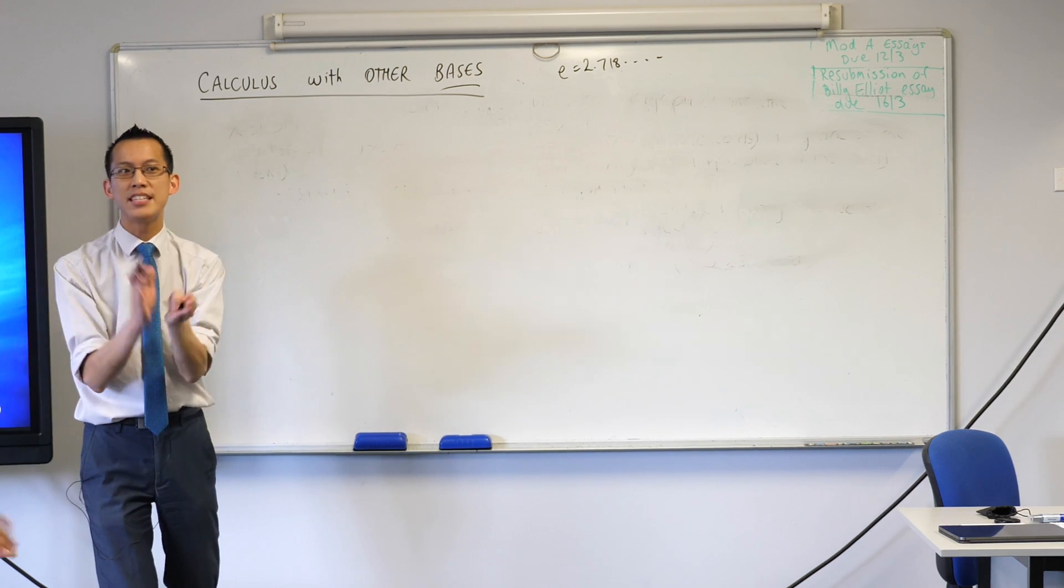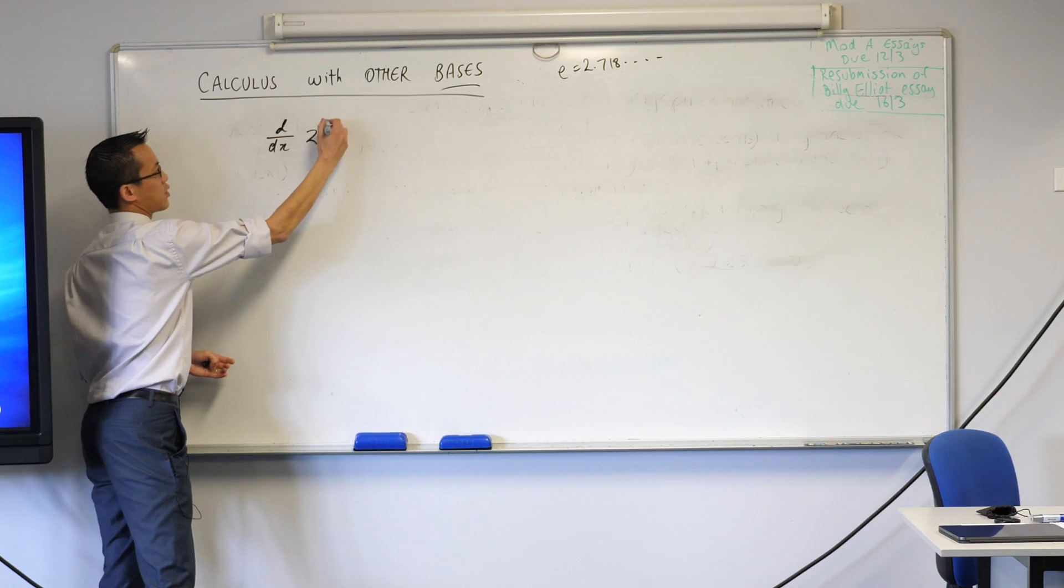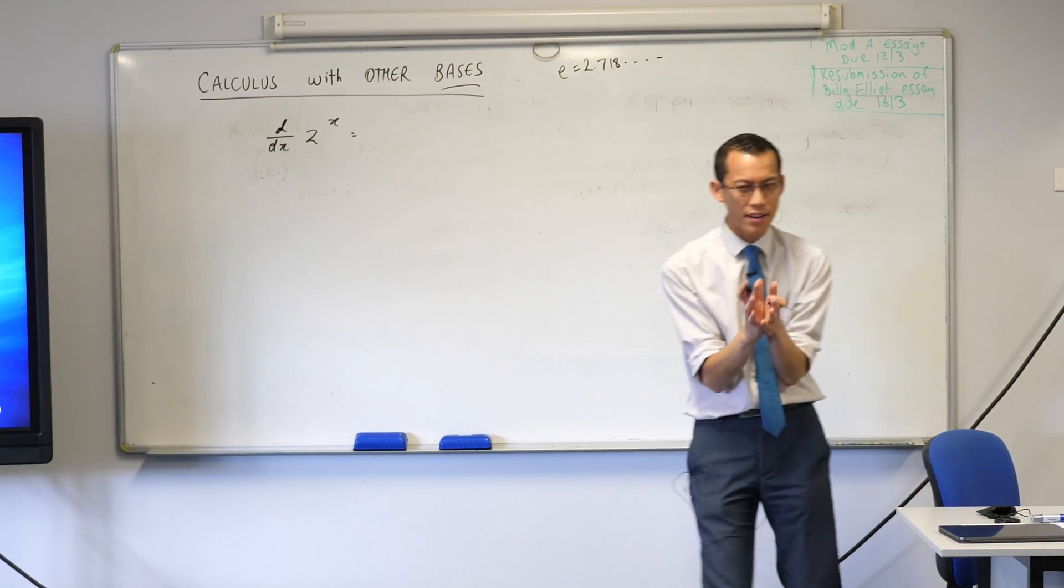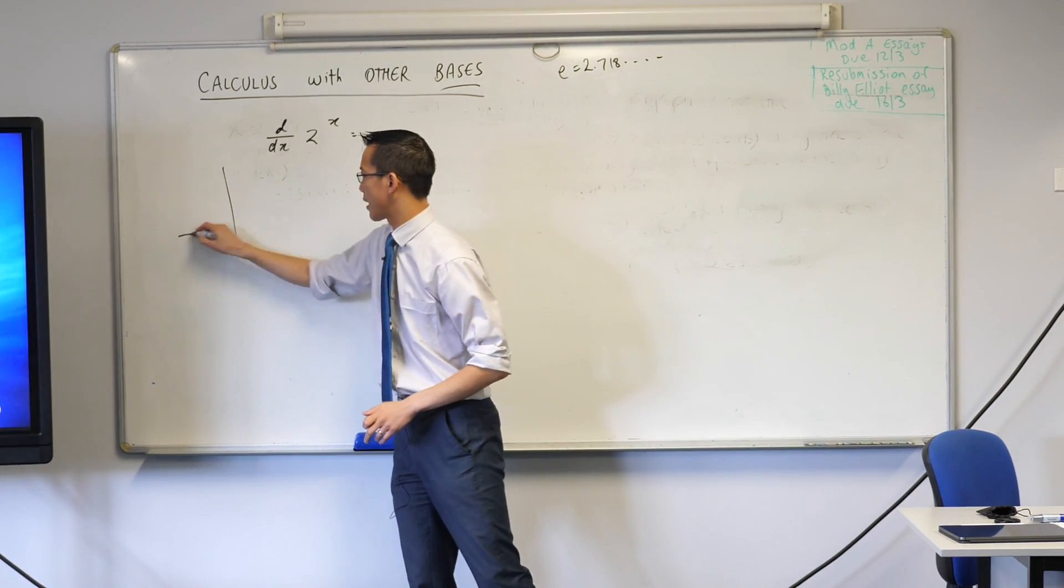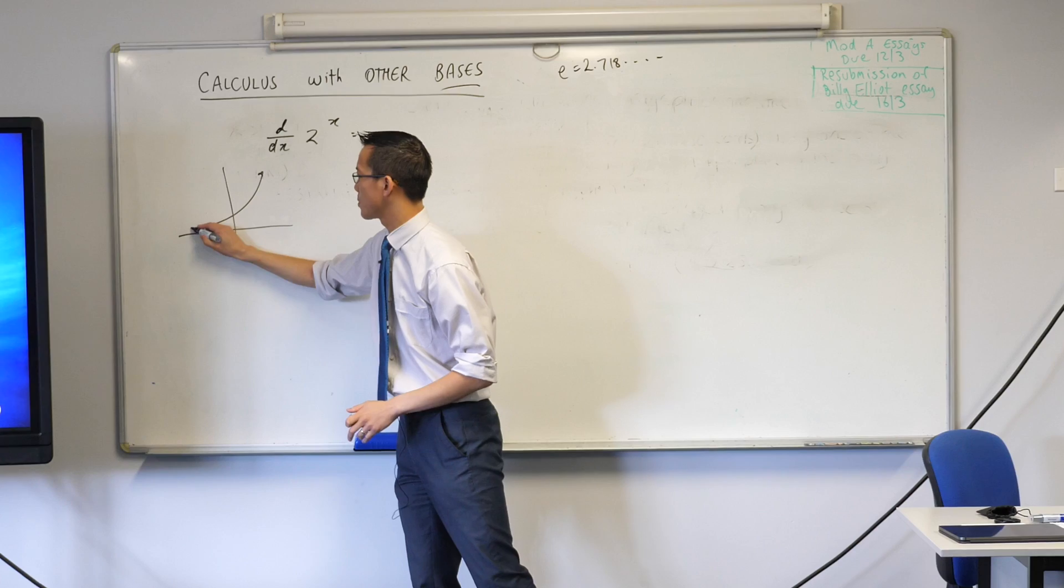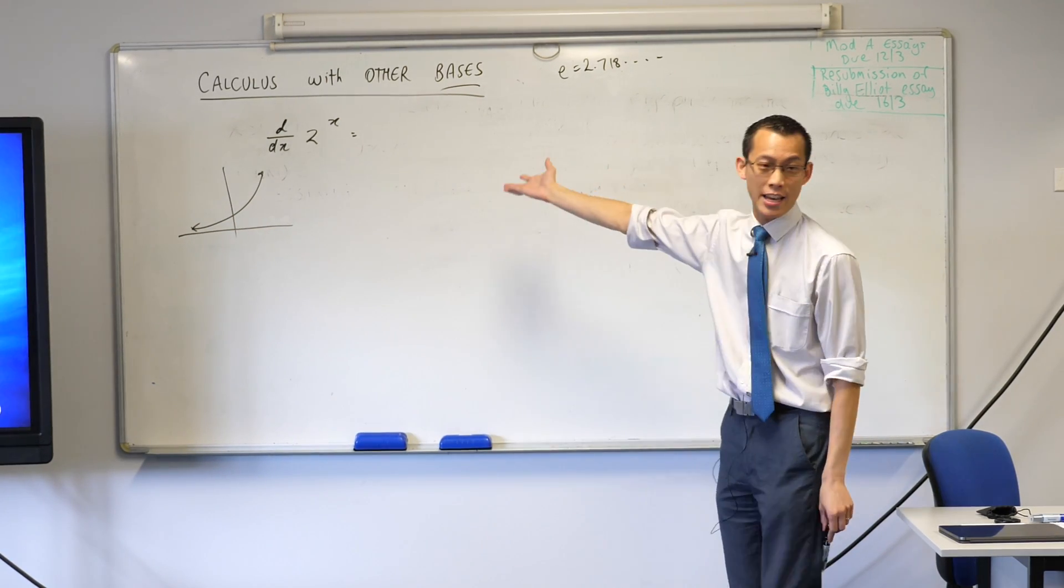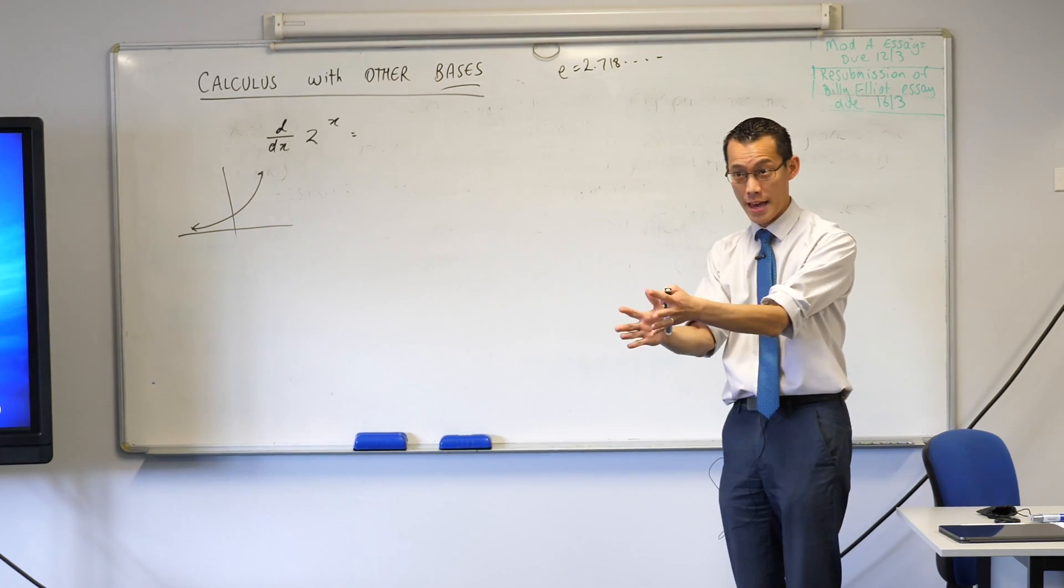Let me remind you of how we differentiate something like 2 to the power of x. Now if you think back to when we did this the first time, the exponential curve does look like this, right? Every exponential curve looks something like that. So the derivatives of these exponential curves are also exponential curves. Do you remember that?